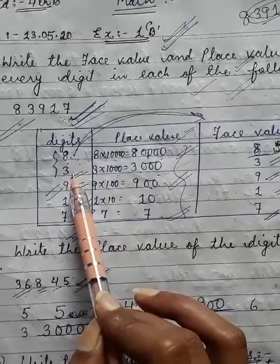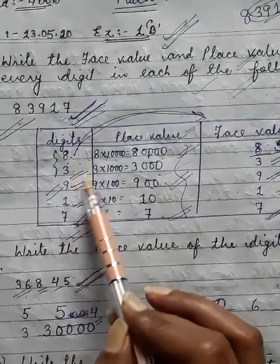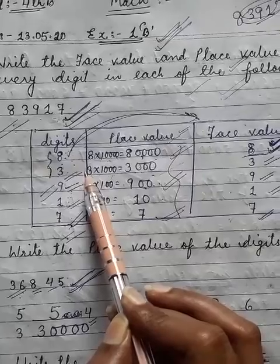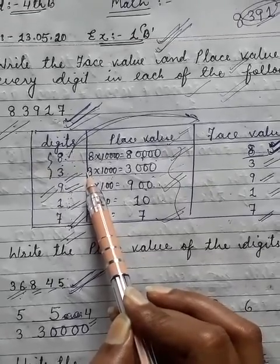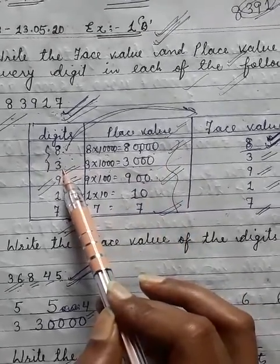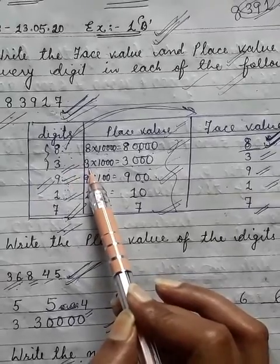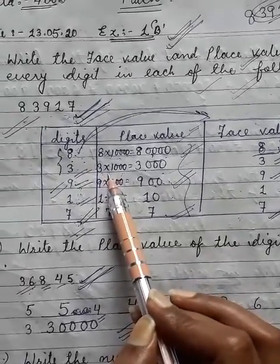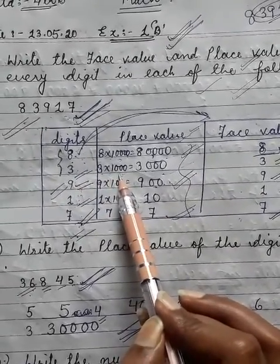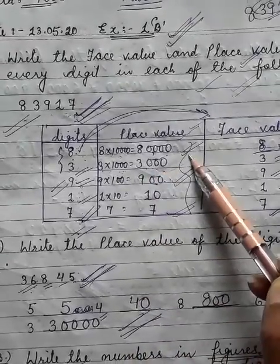For example, to find the place value of digit three, we follow the same steps. We write down the digit three with the multiplication sign and the place value, which is one thousand. So what we get is three thousand — 3 × 1000 = 3000.